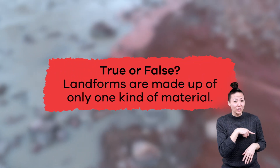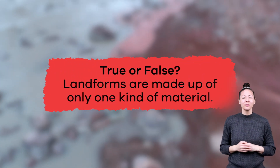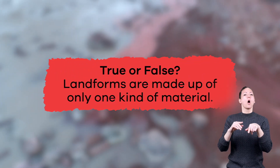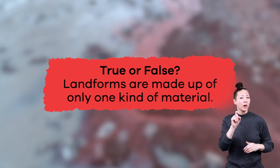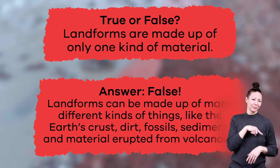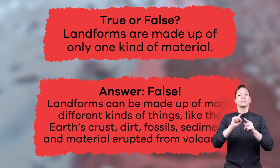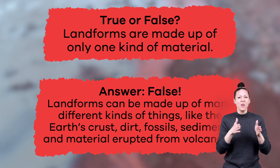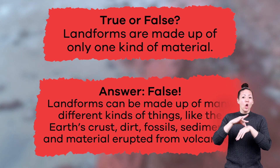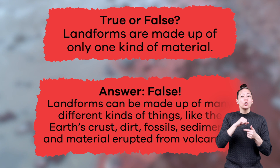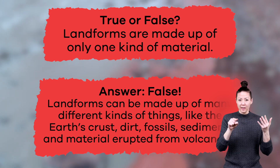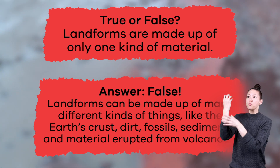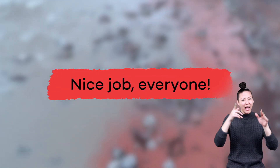True or false: Landforms are made up of only one kind of material. False! Landforms can be made up of many different kinds of things, like the Earth's crust, dirt, fossils, sediment, and material erupted from volcanoes. Nice job, everyone!